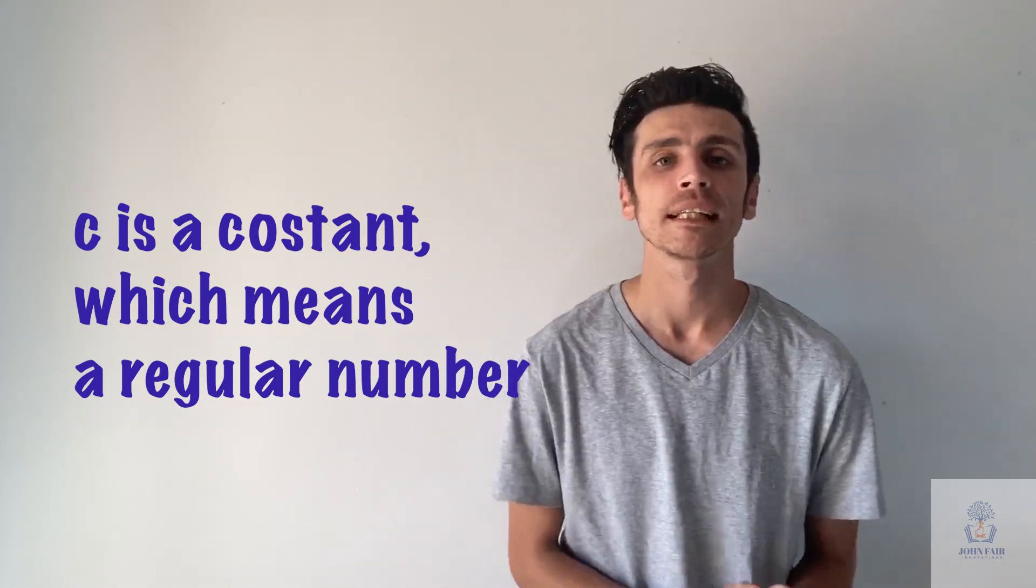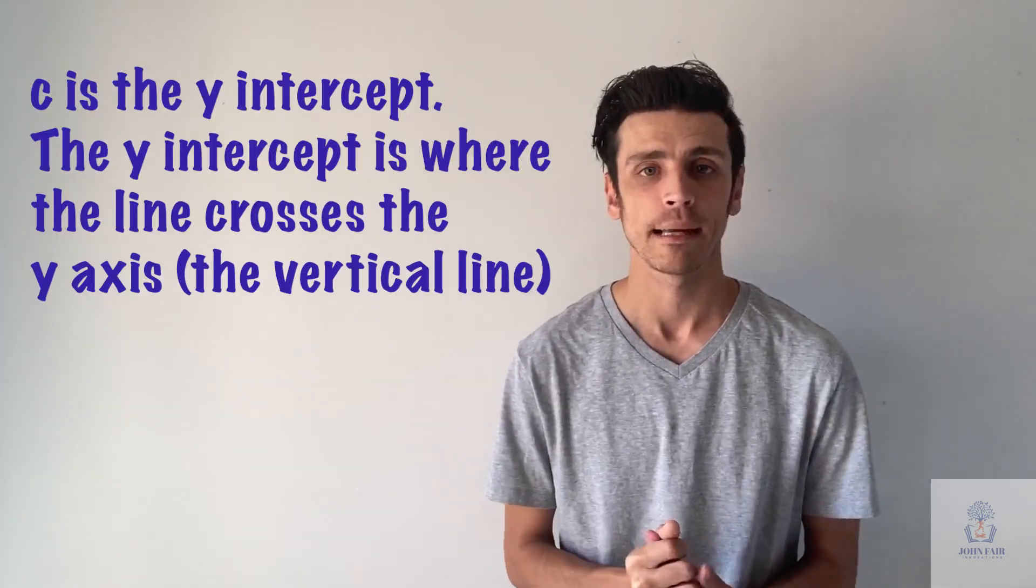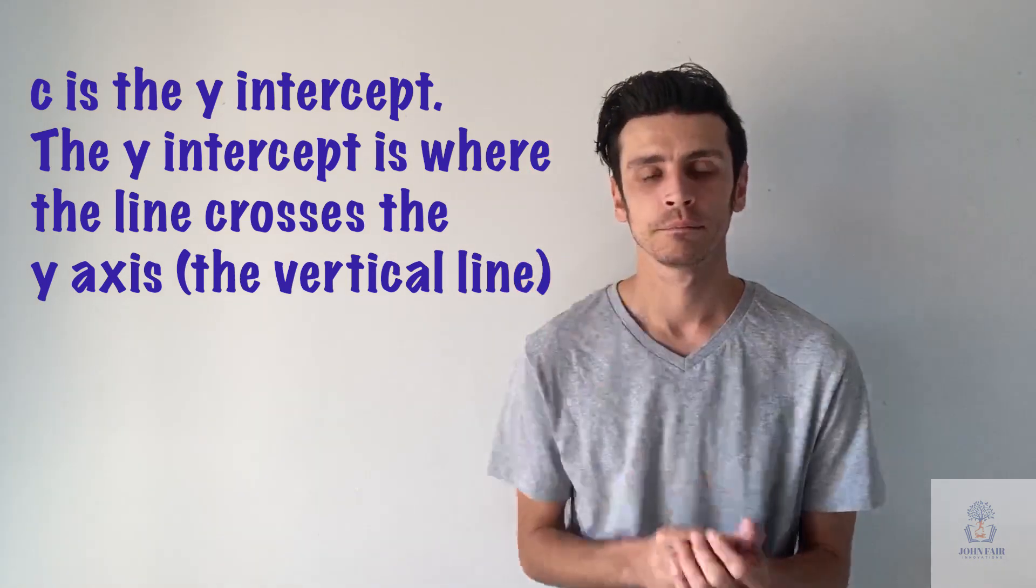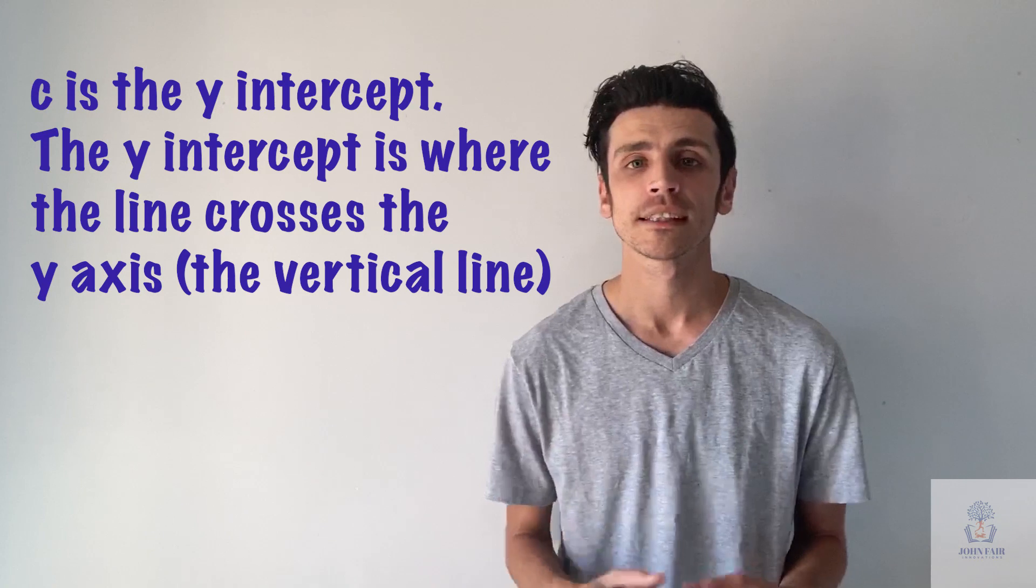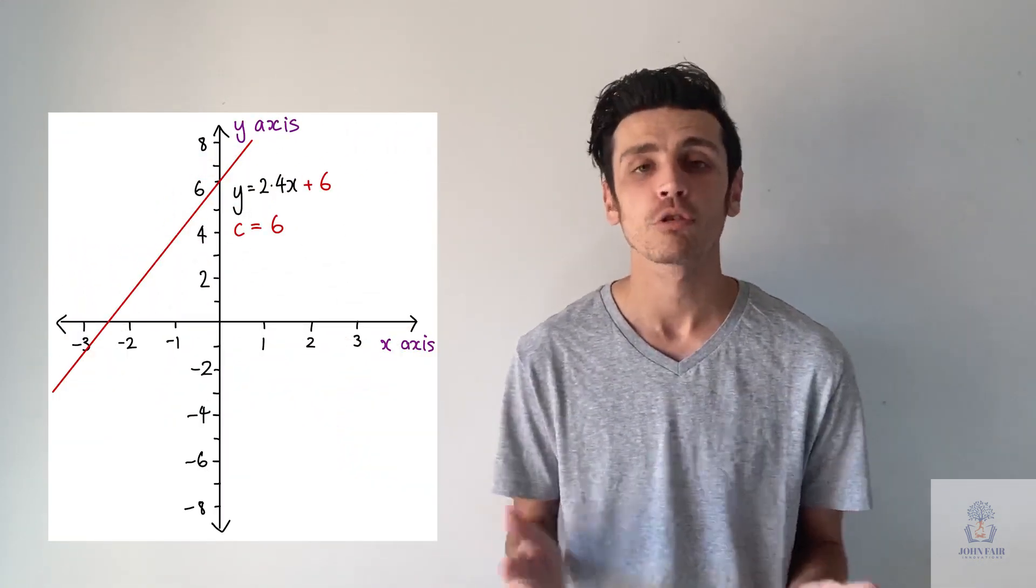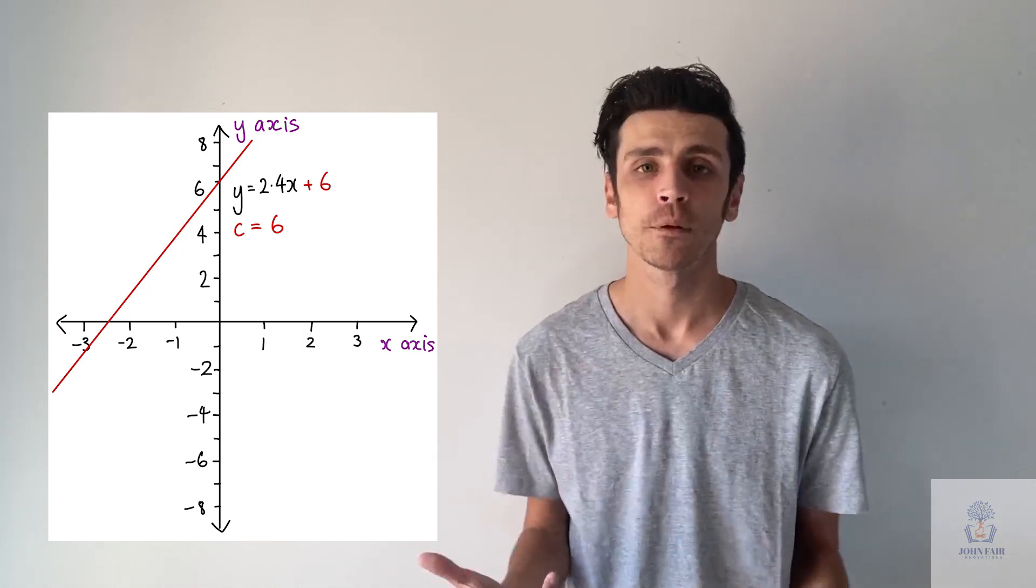But what it actually represents is what's called our y-intercept. And what that means is where our line crosses the vertical line. So if our constant is 6, for example, then we know that our line will cross the vertical line at the 6 point.